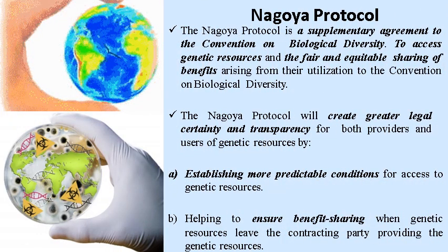The Nagoya Protocol on access to genetic resources and the fair and equitable sharing of benefits arising from their utilization is linked to the Convention on Biological Diversity. It creates greater legal certainty and transparency for both providers and users of genetic resources, establishing more predictable conditions and helping to ensure benefits sharing when genetic resources leave the contracting party providing them. With the signing of the protocol by India, the total number of signatories stands at 23, including Germany, Japan, and Brazil.